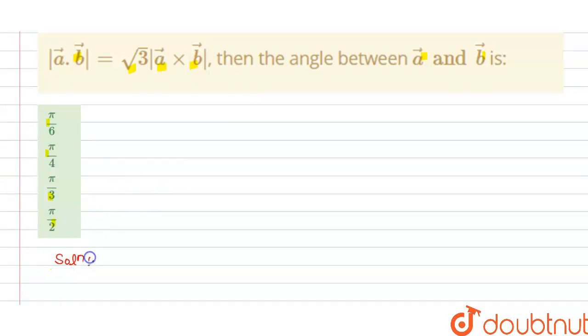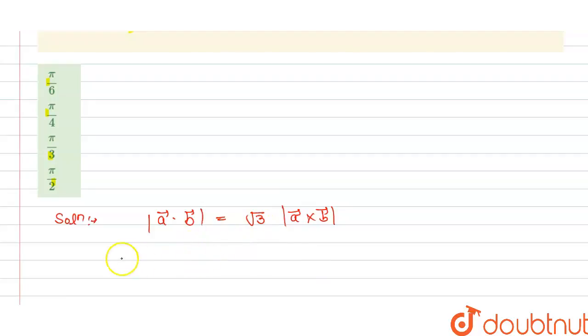So the solution of this question is: we have given here dot product of A vector dot B vector magnitude is equals to under root 3 times cross product of A vector and B vector, and we have to take the magnitude here.